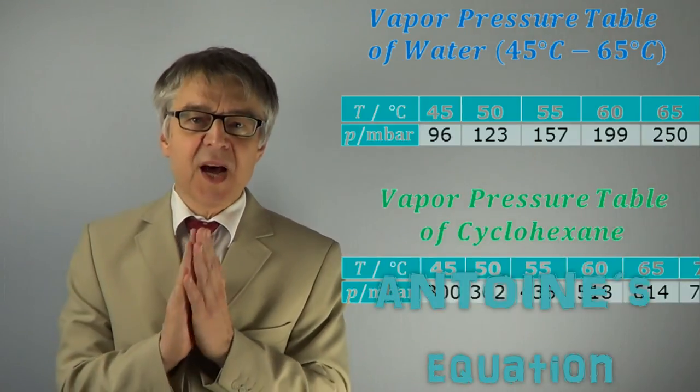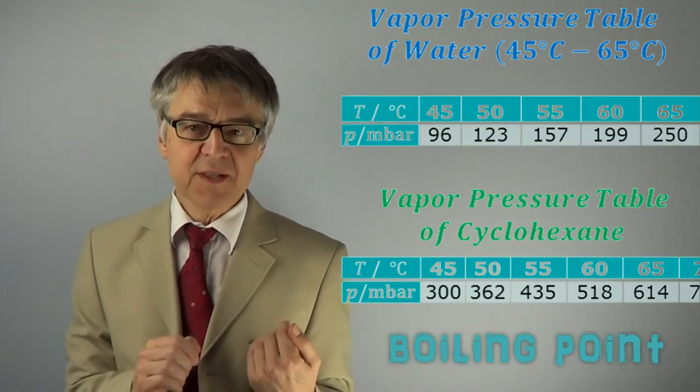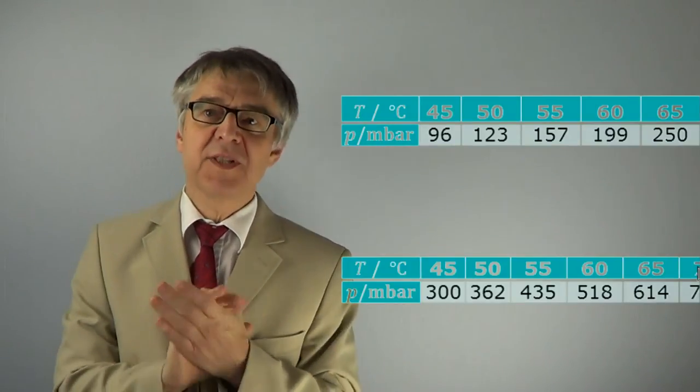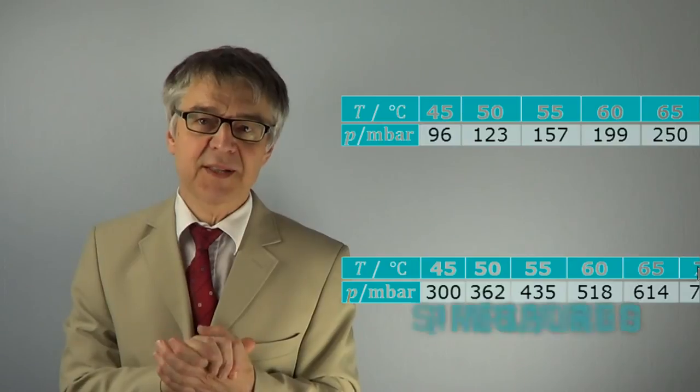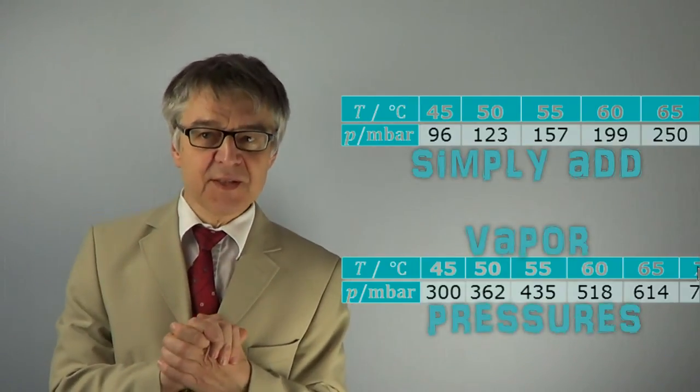A liquid starts to boil when the vapor pressure above the liquid phase corresponds to the external pressure. We must therefore only screen these two tables, adding the vapor pressures at different temperatures. Once the result meets the external pressure, the mixture will begin to boil.